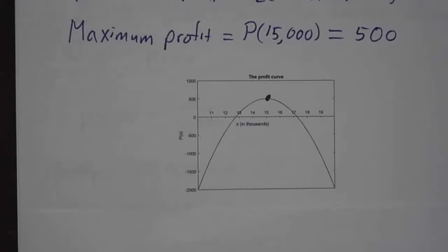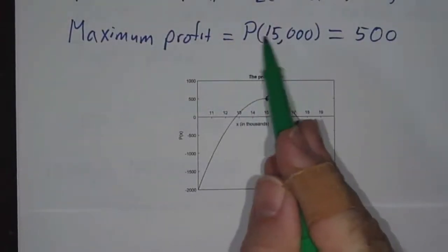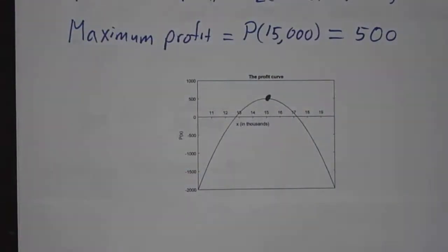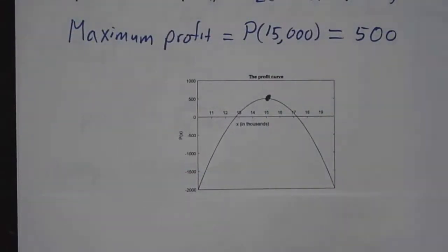Now, that doesn't tell us whether the profit is positive or negative. For that, you have to plug it back into the function for P of X. So you plug in 15,000, and it turns out that you get 500. So at a production level of 15,000 widgets, the factory is profitable. It's barely profitable, but it's profitable. And so you can keep it open. The workers can keep their jobs. Everybody's happy.